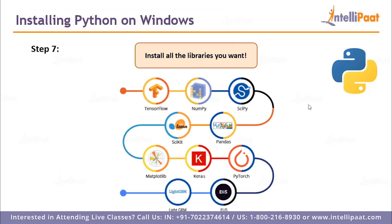Coming back to the presentation, step seven is an optional step but you'll get there soon whether you're a beginner or an advanced learner — install the libraries you want. There are many libraries Python supports; the most popular ones include TensorFlow, NumPy, SciPy, Scikit-Learn, Pandas, Matplotlib, Keras, PyTorch, LightGBM, and many more. These are machine learning and deep learning oriented libraries, and the next step after installing Python is to install the packages and libraries you want to work with.